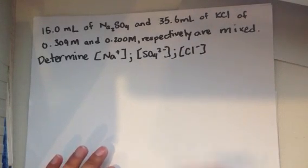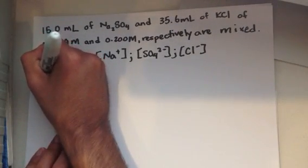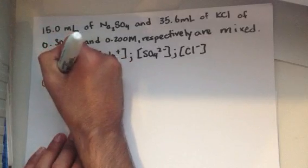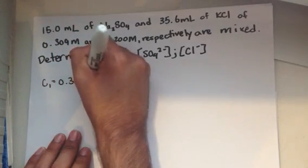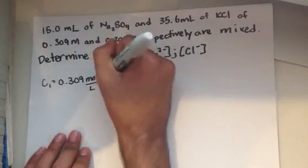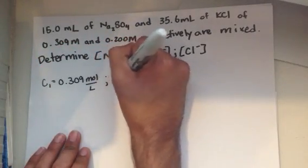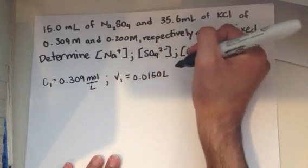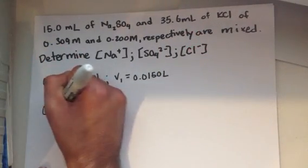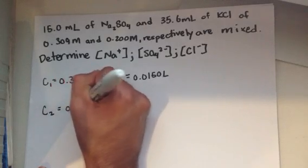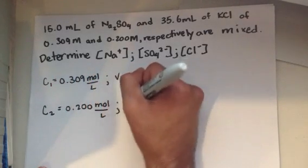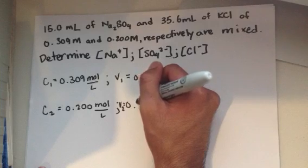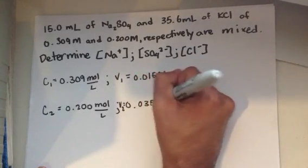The first step — what I like to do — is always write down all the information given. So, the concentration of solution 1 equals 0.309 moles per liter and the volume of solution 1 is 0.0150 liters. For solution 2, the concentration is 0.200 moles per liter and the volume is 0.0356 liters.